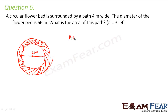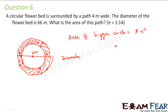Let us first find the area of the bigger circle. The area of the bigger circle would be π r². What would be the radius for the bigger circle? 66 meters is the diameter for the smaller circle, so when you consider the bigger circle, the diameter would be 66 plus 4 on this side plus 4 on this side. So the diameter of the bigger circle is 66 + 4 + 4, which equals 74 meters.